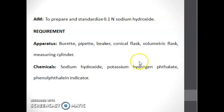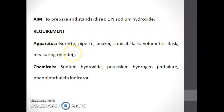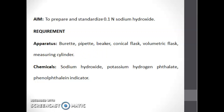Students, we will see the requirements for today's practical, that is the preparation and standardization of 0.1 normal sodium hydroxide solution. The apparatus required are burette, pipette, beaker, conical flask, volumetric flask, and measuring cylinder. The chemicals required are sodium hydroxide, potassium hydrogen phthalate, and phenolphthalein indicator.